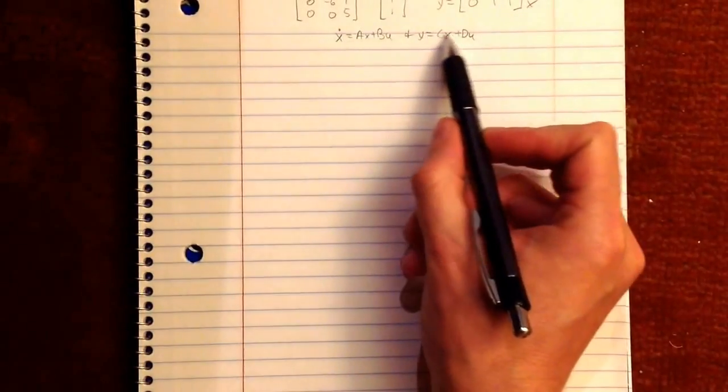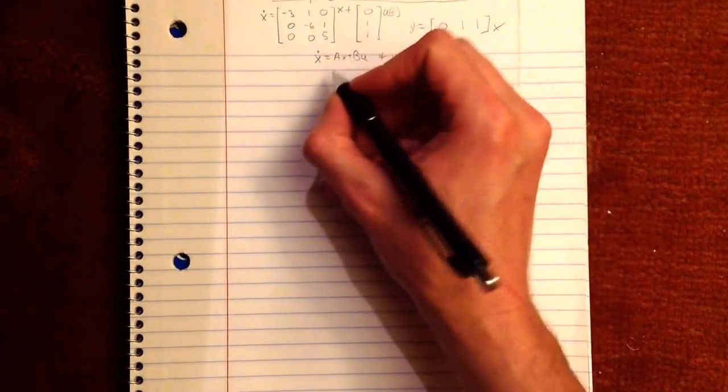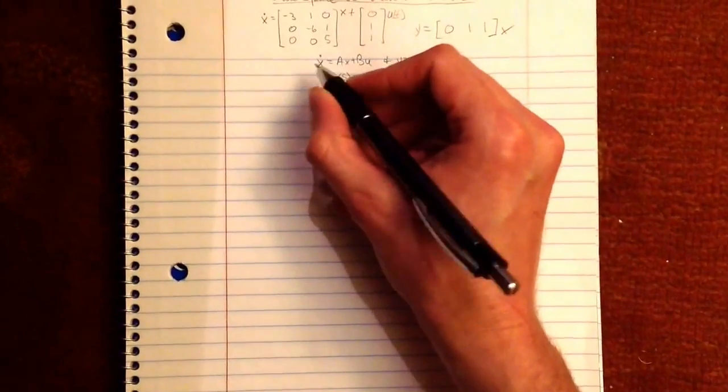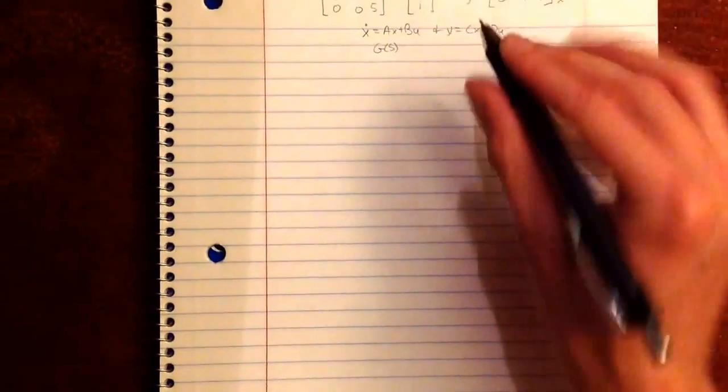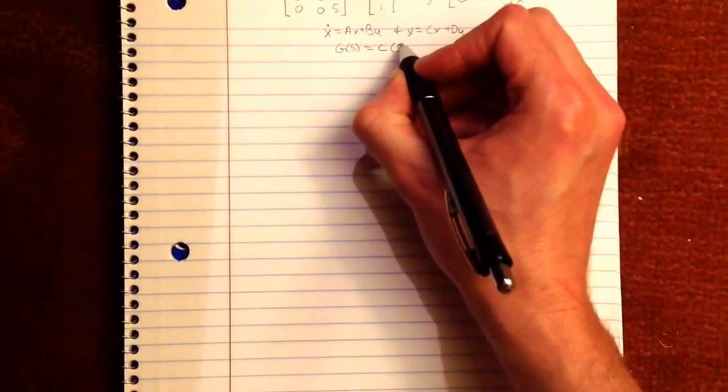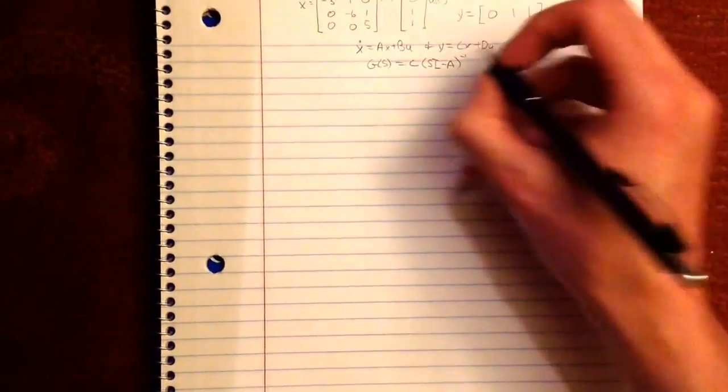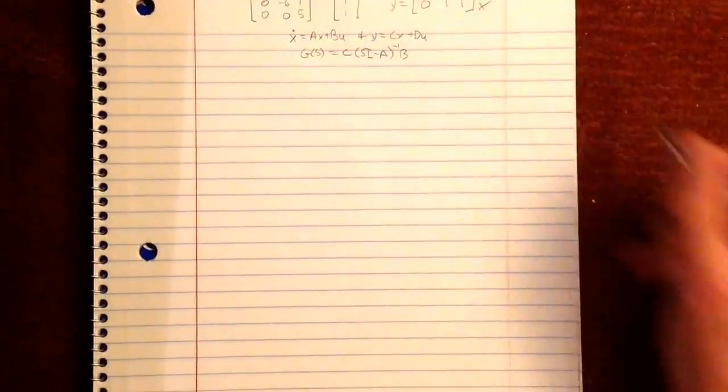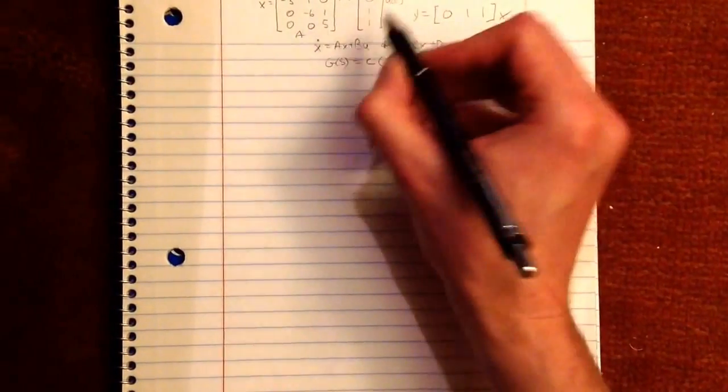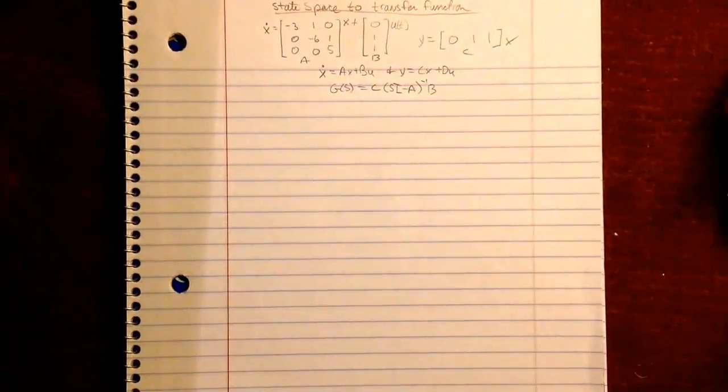So you follow this formula here. The next thing I'm going to write is going to be better for you. You can derive this from this, but this is just the easy way. C times S identity matrix minus A inverse B, where this matrix is A, this is B, this is C, and D is just a matrix of zeros in this case.